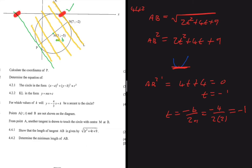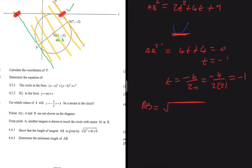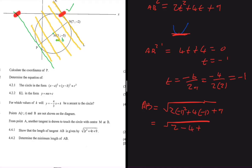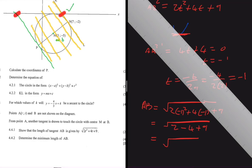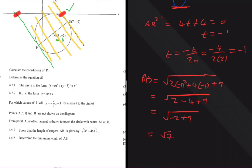Substituting T equals minus 1 into AB: AB equals the square root of 2 times (minus 1) squared plus 4 times (minus 1) plus 9, which gives the square root of 2 minus 4 plus 9, equals the square root of 7. Therefore the minimum length of AB is the square root of 7.